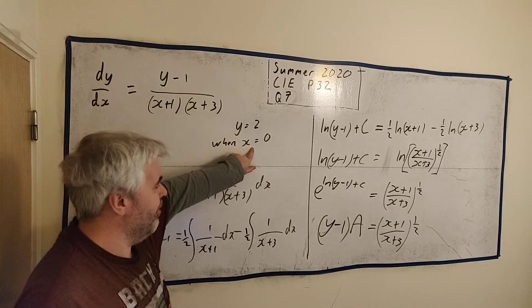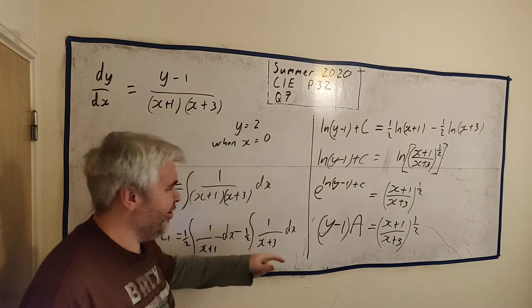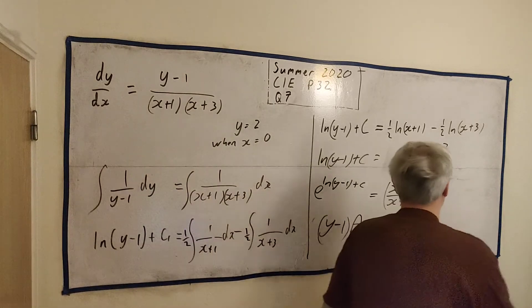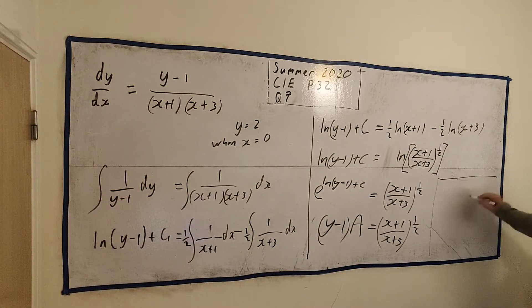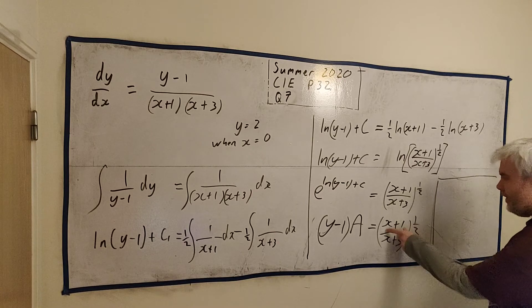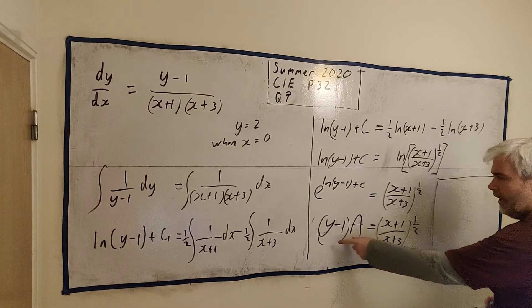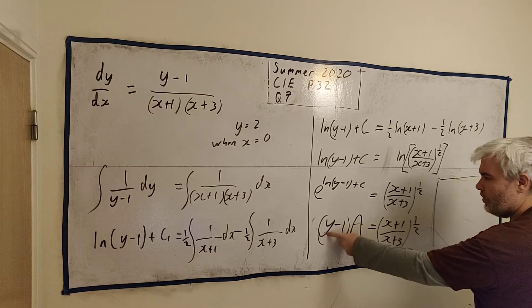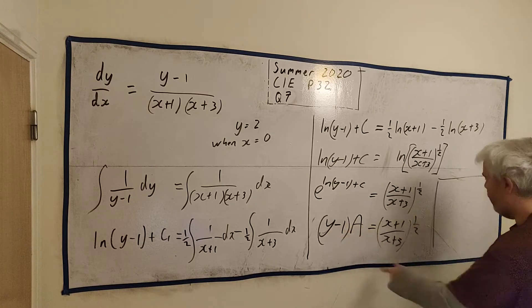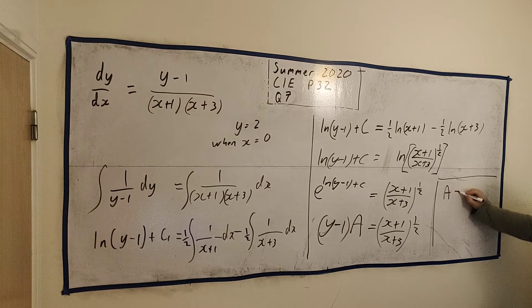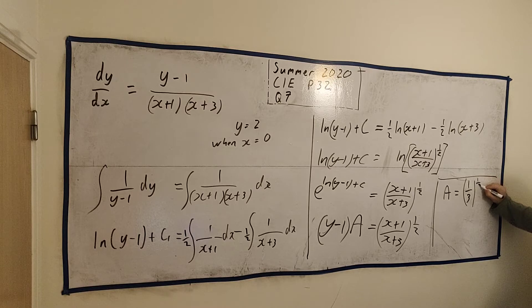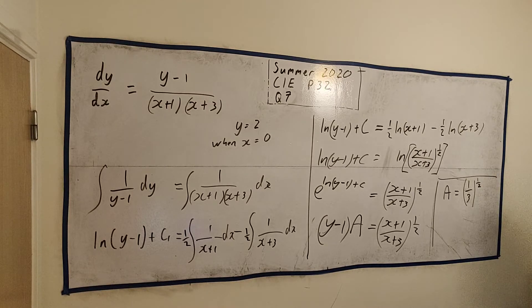Remember, when x equals 0, y equals 2. So we can just put all that in here and find out what a is equal to. Let's see. x equals 0 becomes 1 over 3. And y equals 2 becomes 2 minus 1. So we're just left with a is equal to 1 over 3, the square root of 1 over 3. Yeah, the square root of 1 over 3. So that's what we're just left with a there.